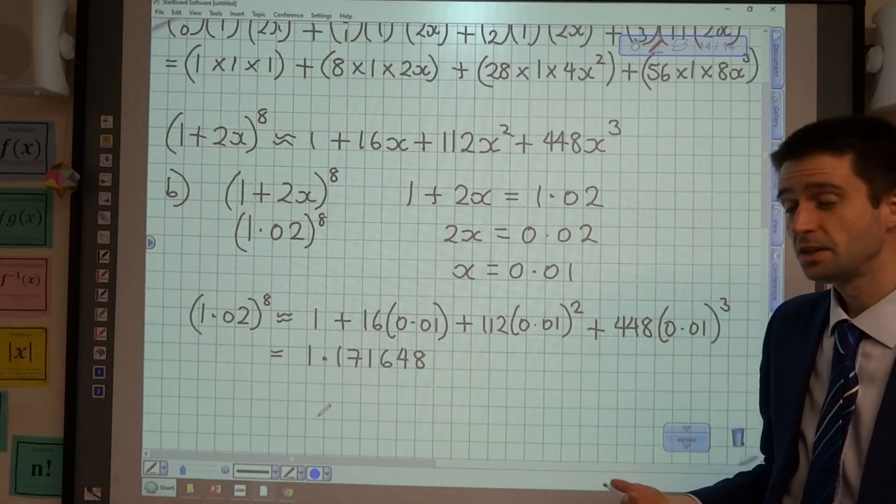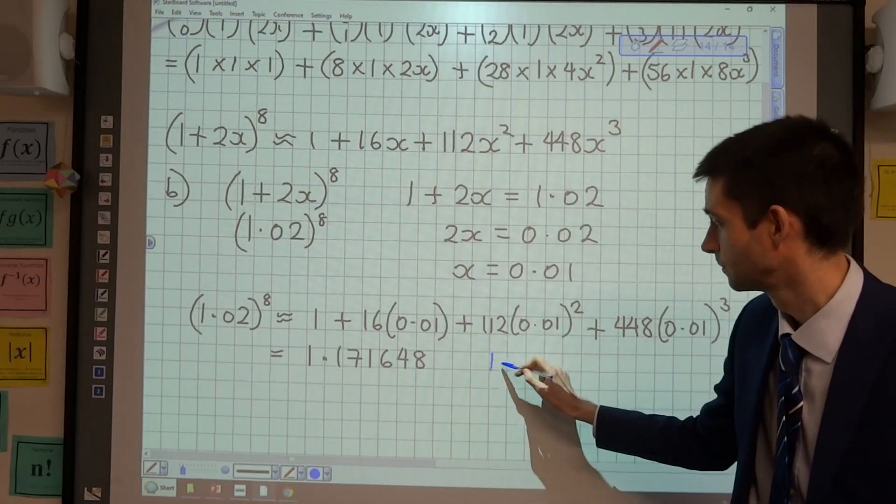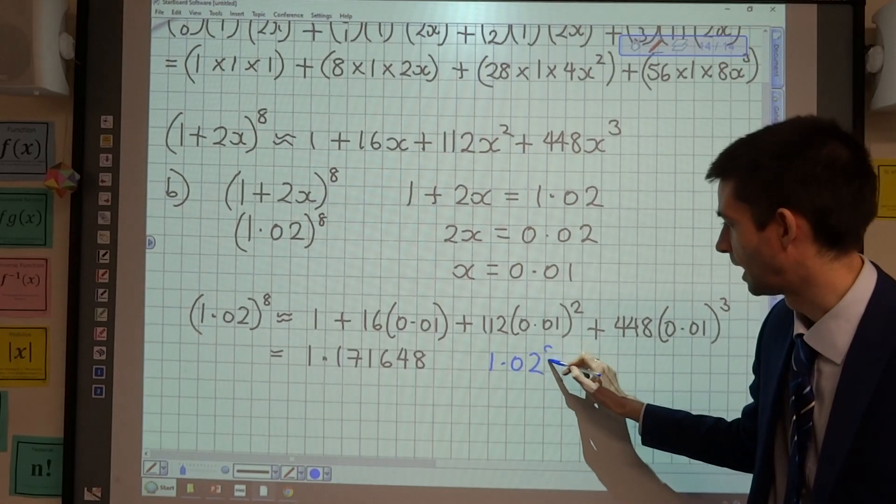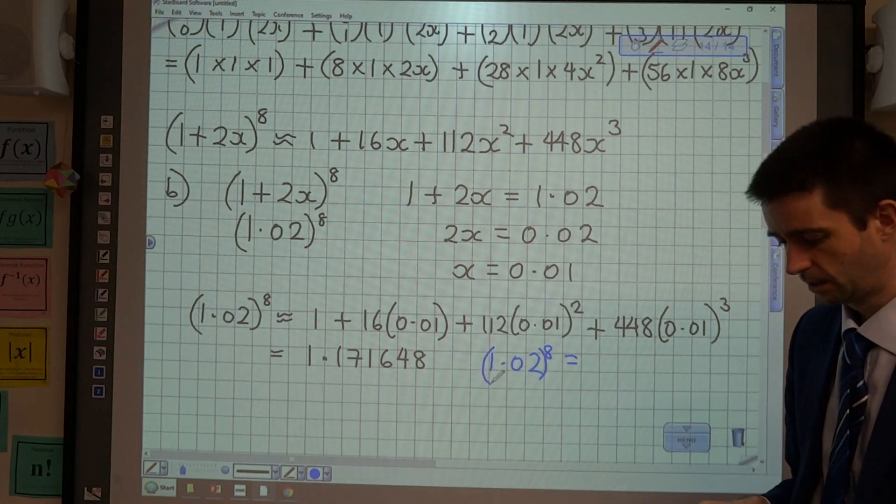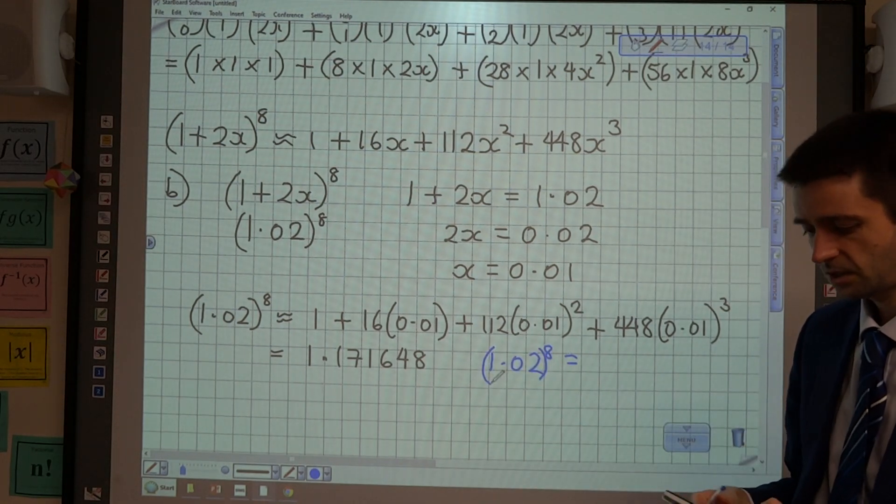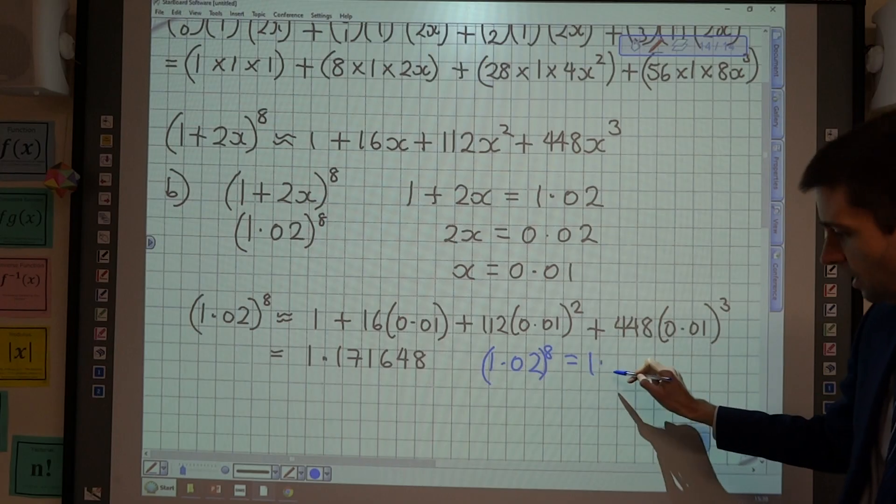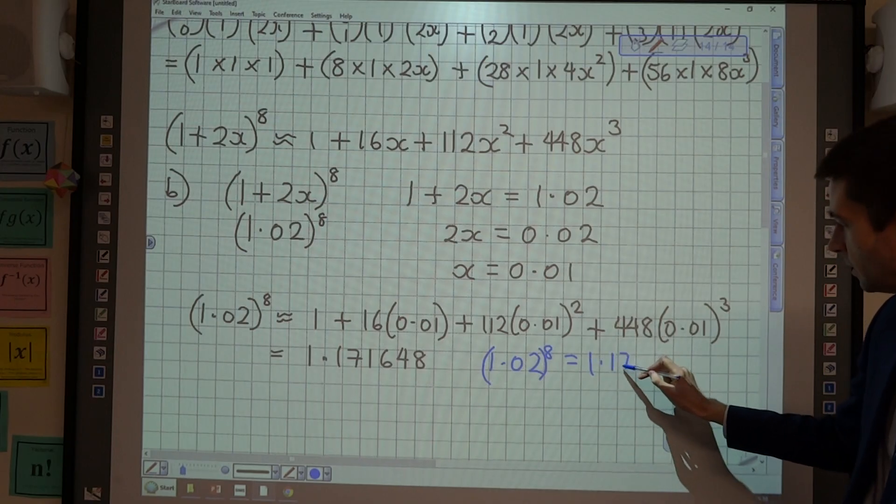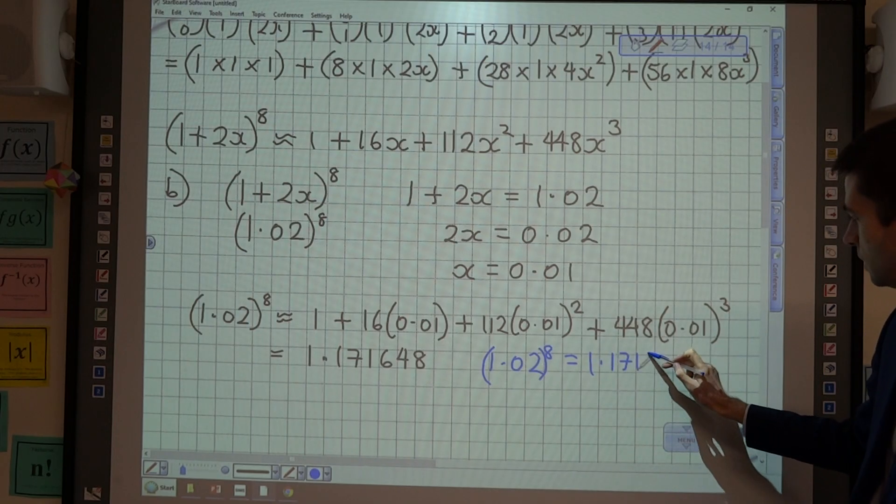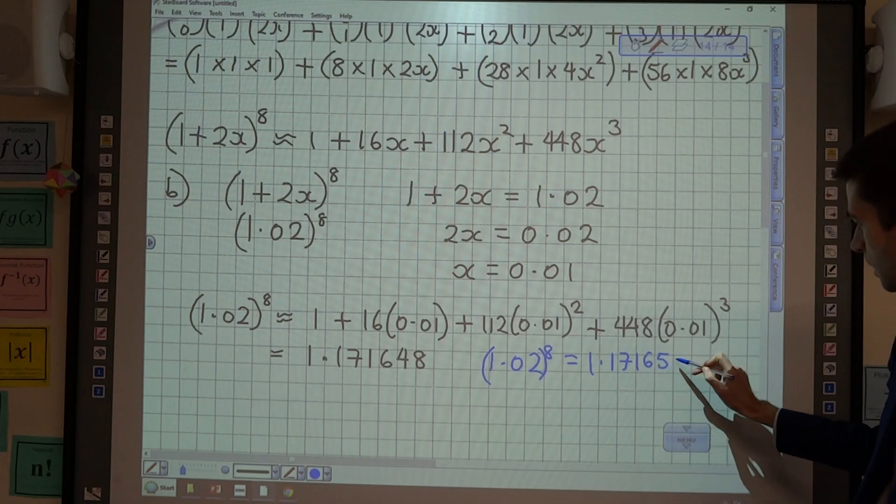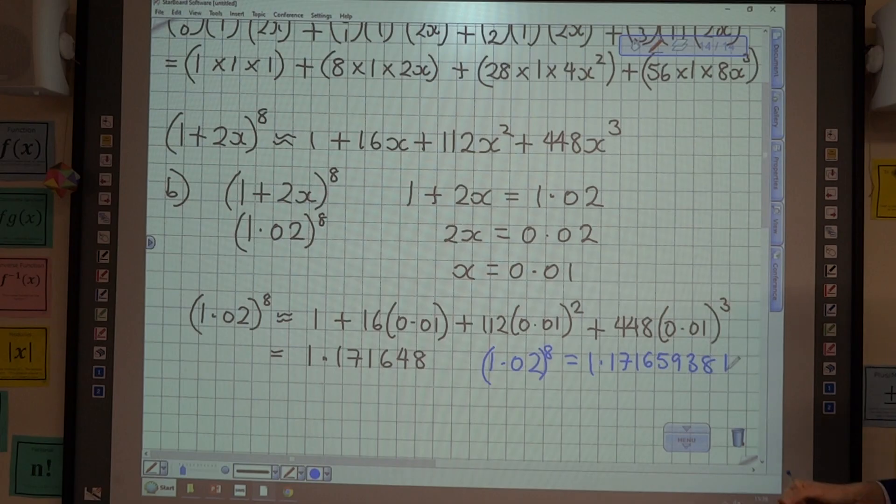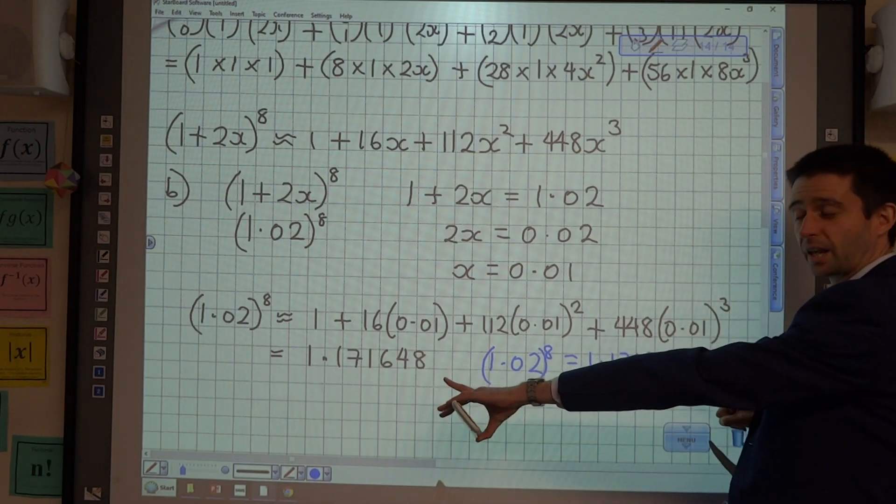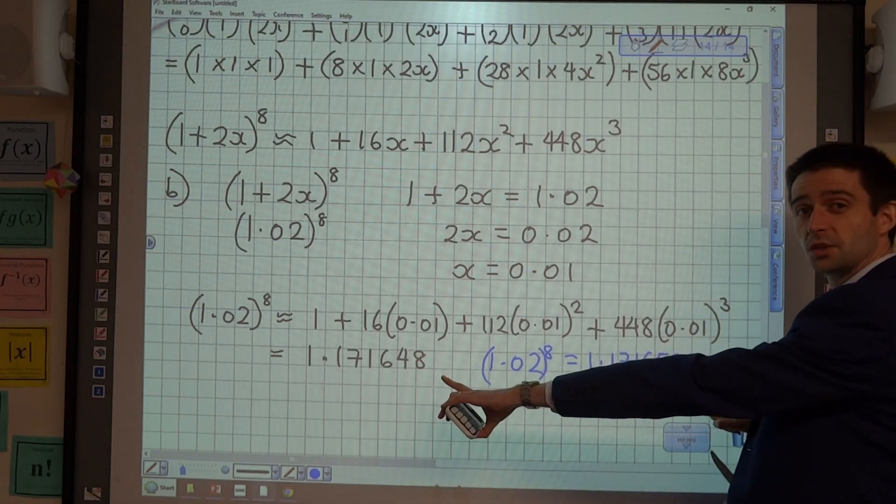And what I can do to check here is I can work out the actual value of (1.02)^8 and compare it. So I'm just going to do that now. 1.02 to the power of 8. And the true answer is 1.171659381. I'm just writing every number on my calculator screen. And as you can see, it's pretty good. It's a pretty decent approximation. It's quite close to the real answer.